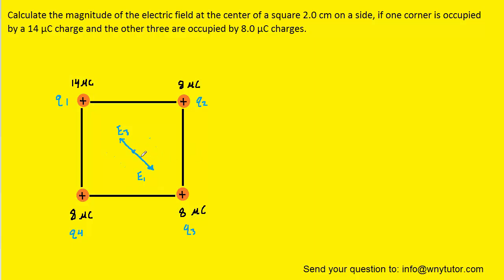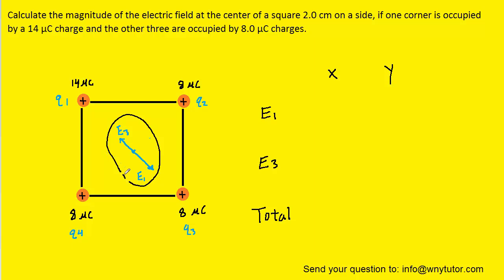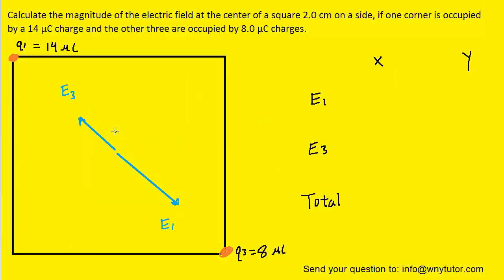Now that we've established the important electric field vectors at work, we can organize them into a convenient table with E1, E3, and the total electric field. Since electric fields are vectors, we need to break them into their x and y components. To see those components more clearly, we draw a zoomed-in picture of the center of the square and superimpose an x and y axis at that point.